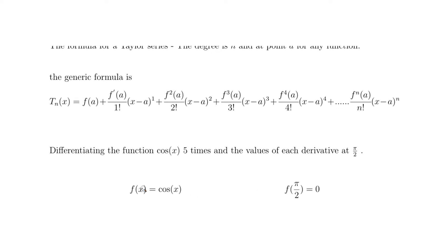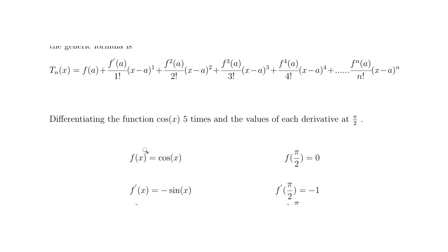Our function is cosine of x, and at π/2 — which is f(π/2) — the value is zero. That is, cosine of 90° is zero, so that's the first calculation. The derivative of cosine is minus sine, so the first derivative is minus sine. The first derivative evaluated at π/2 is minus 1, because sine of π/2 is 1, so minus sine of π/2 is minus 1.